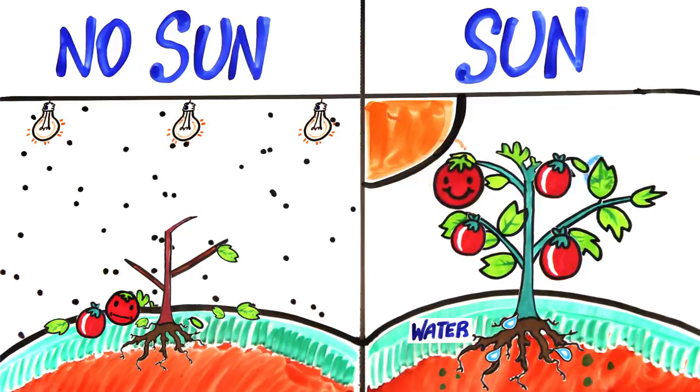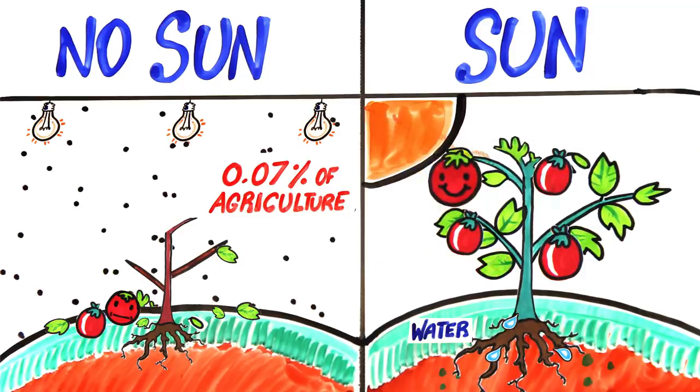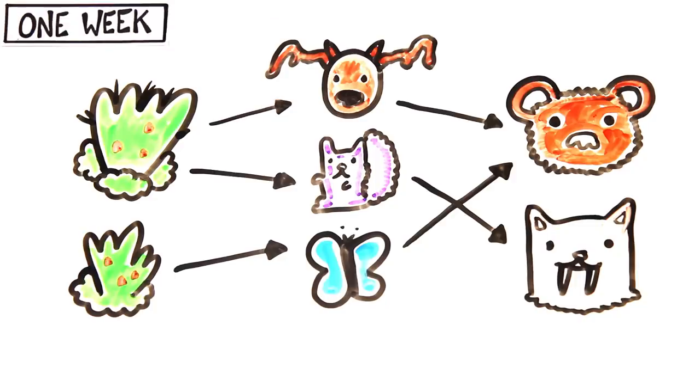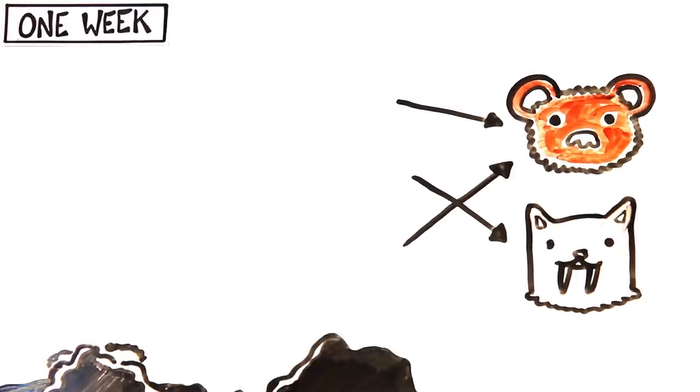Currently, indoor farming accounts for 0.07% of agriculture, meaning food production would go into crisis. After a week, natural plant life would start decomposing, bringing on the collapse of our entire food web.